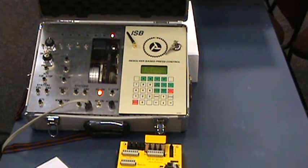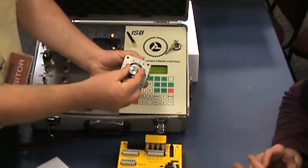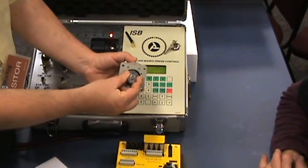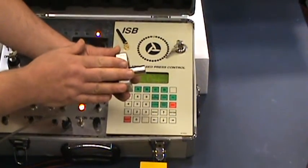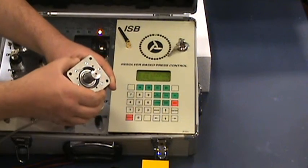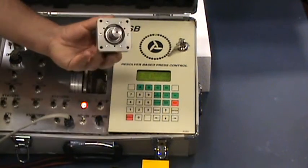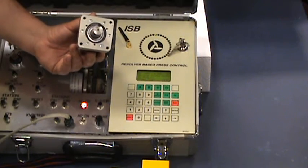So in every kit we supply, we also supply a resolver. This one happens to be, you can see the shaft is pretty big. It's a three quarter inch keyed shaft. The body of all our resolvers are exactly the same. The mounting is the same. It's the shaft and the bearing size that determine.